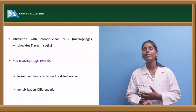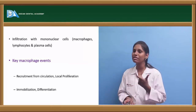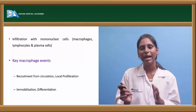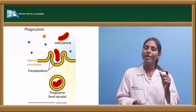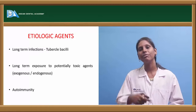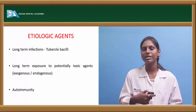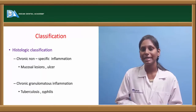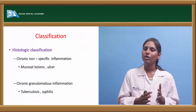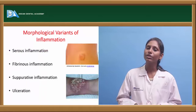Chronic inflammation involves infiltration of mononuclear cells like macrophages, lymphocytes, and plasma cells. Key macrophage events include recruitment from circulation, local proliferation, immobilization, and differentiation. Phagocytosis is the most important macrophage event. Etiological agents for chronic inflammation include long-term infections like tuberculosis, prolonged exposure to toxic exogenous or endogenous agents, and autoimmunity. Histologically, chronic inflammation is classified as non-specific (mucosal lesions and ulcers) or chronic granulomatous inflammation (tuberculosis, syphilis).